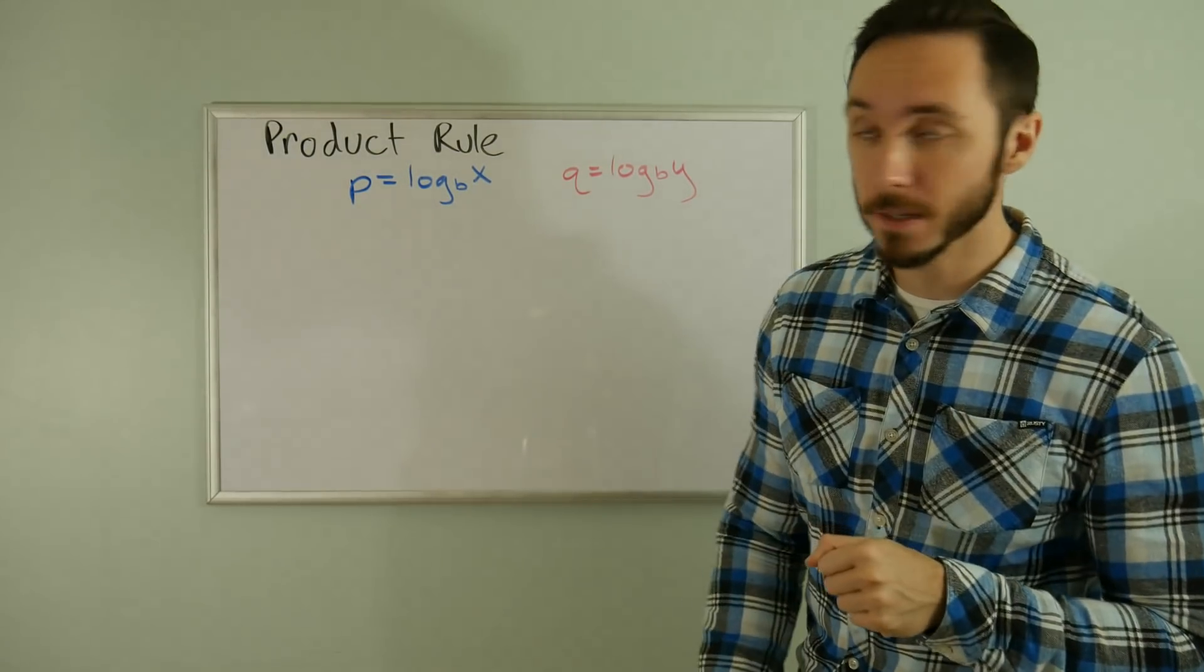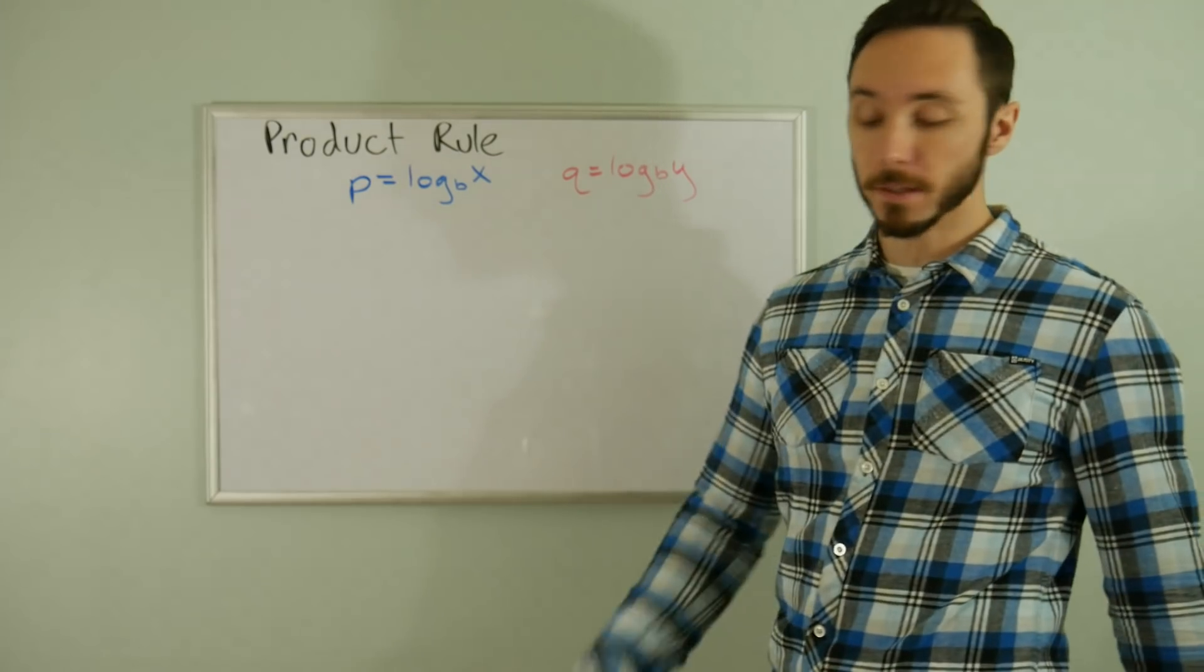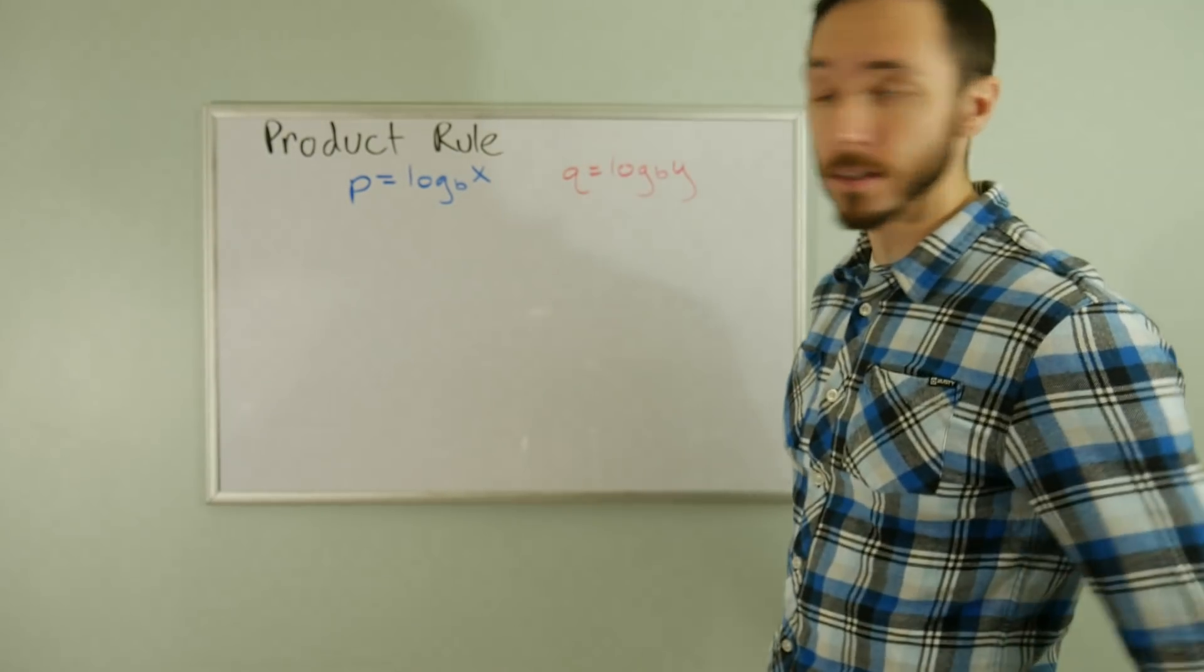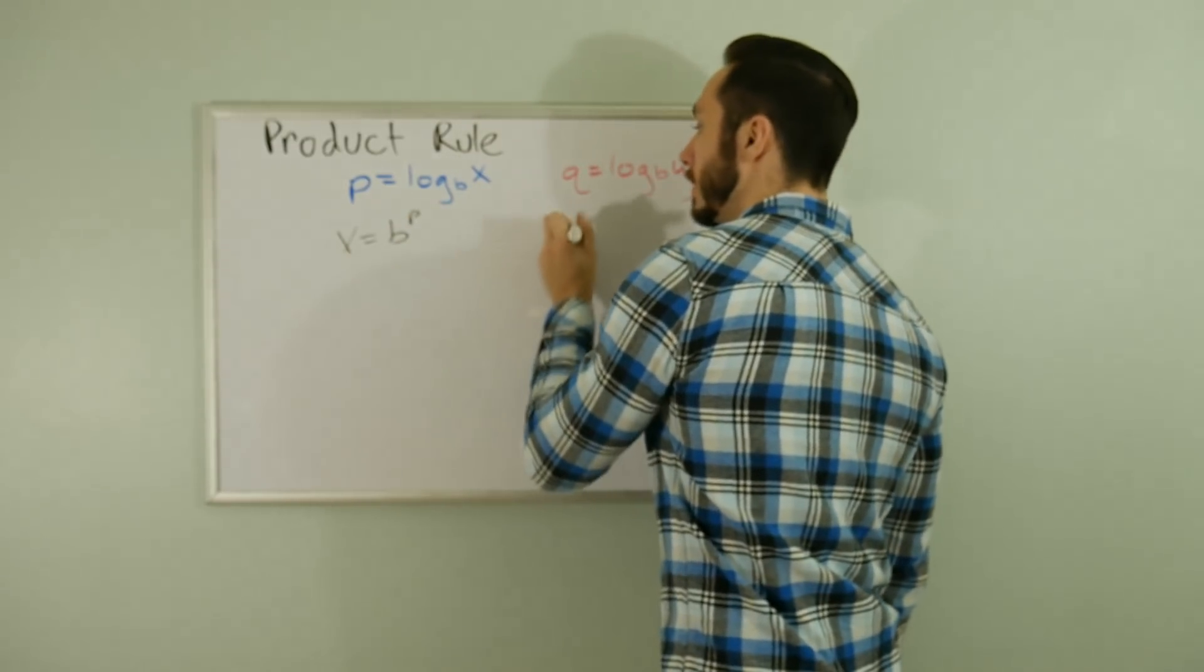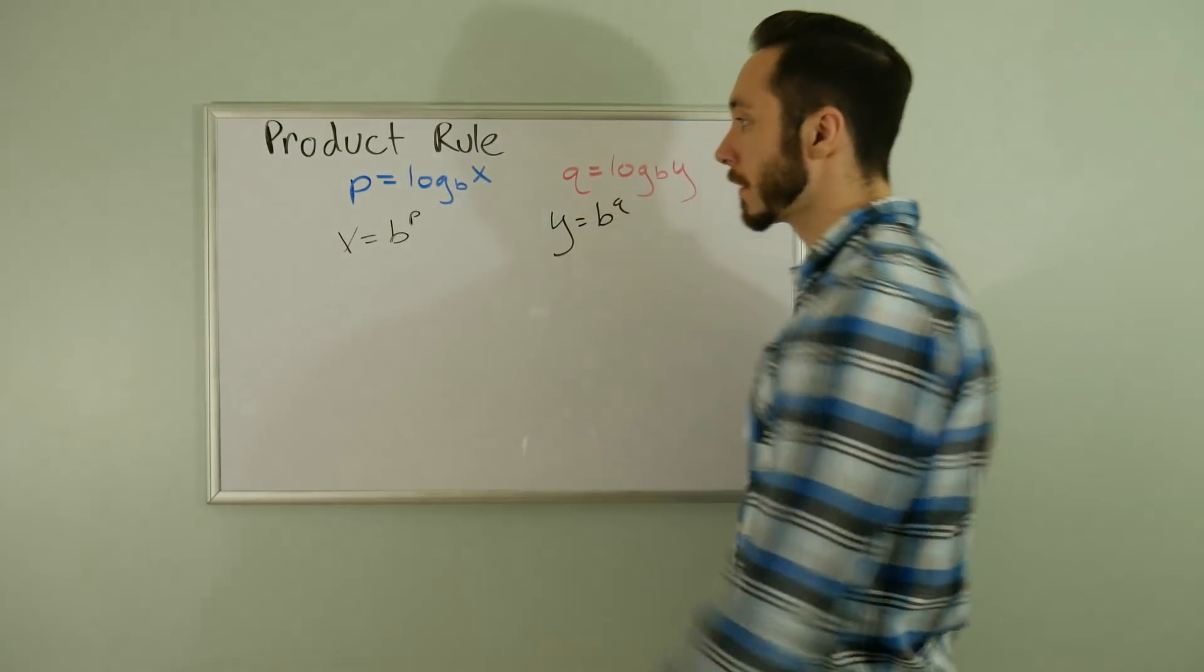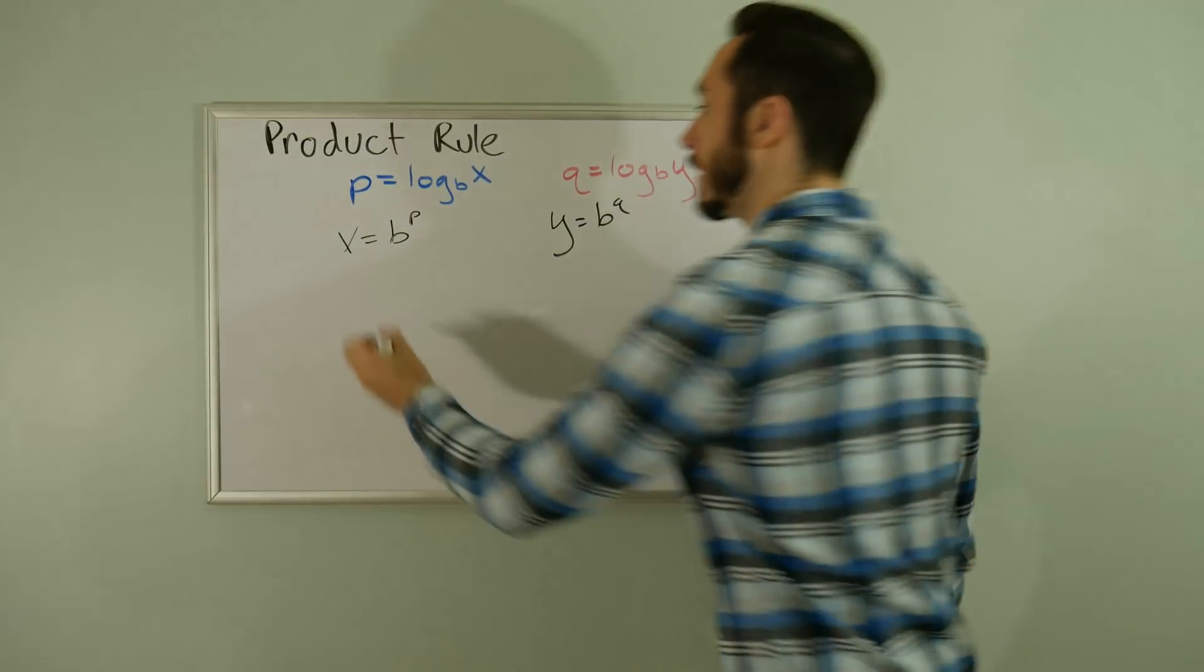Product rule next. Here I have P = log base B of X and Q = log base B of Y. I'm going to rewrite these using the definition of a log: X = B^P and Y = B^Q.